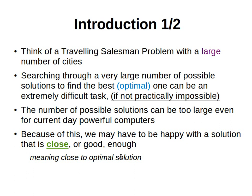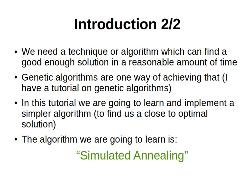Because of this we may have to be happy with a solution that is close or good enough, because going through all possible solutions and evaluating all of them to choose the one with minimum distance — that's nice but unfortunately it's not feasible. Simulated annealing gives us the ability to find a close-to-optimal solution instead of iterating through all possible solutions. I also have an introduction to genetic algorithms on my YouTube channel — that's another way of finding a good solution — but in this tutorial we're going to implement a simpler algorithm: simulated annealing.